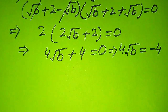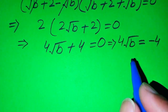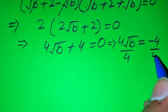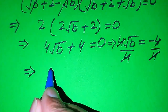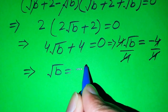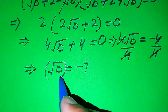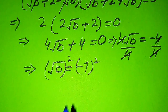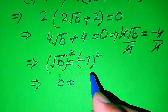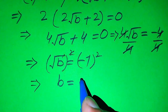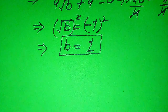We divide both sides by 4, so the 4s cancel, giving us √B = -1. To find B, we square both sides. The square root and the squaring cancel, leaving B = (-1)² = 1. So the value B = 1 is what we obtain from method one.